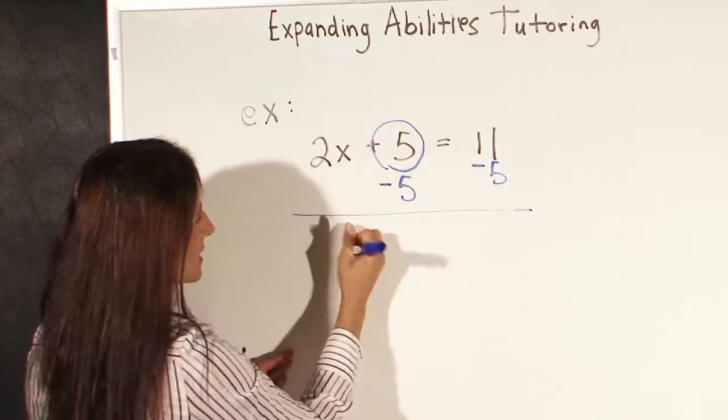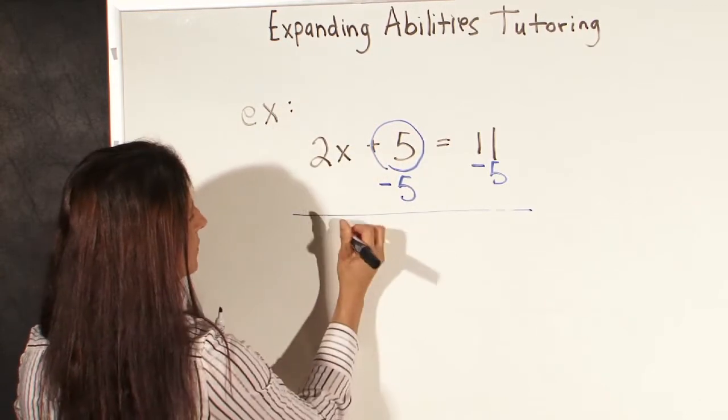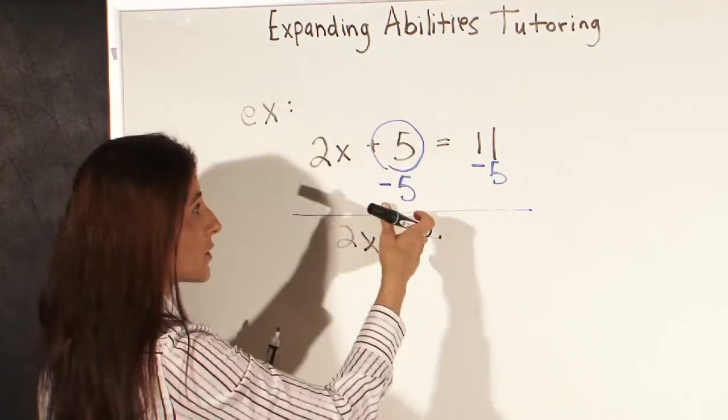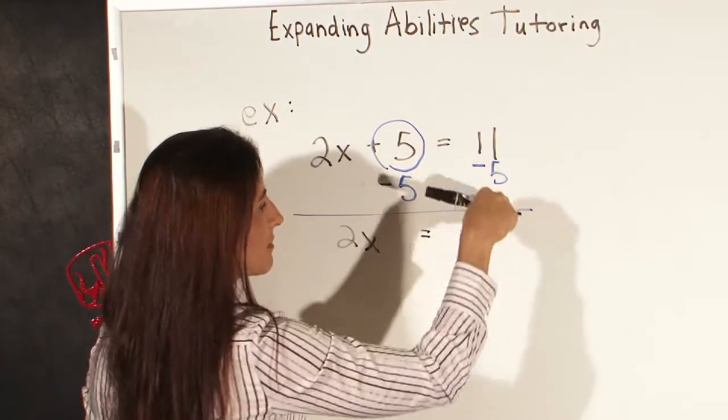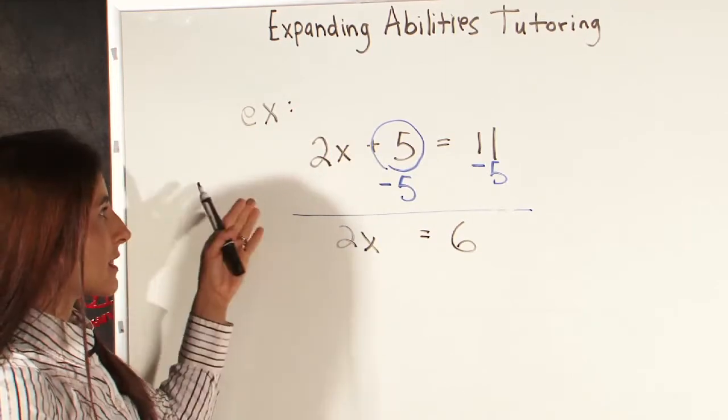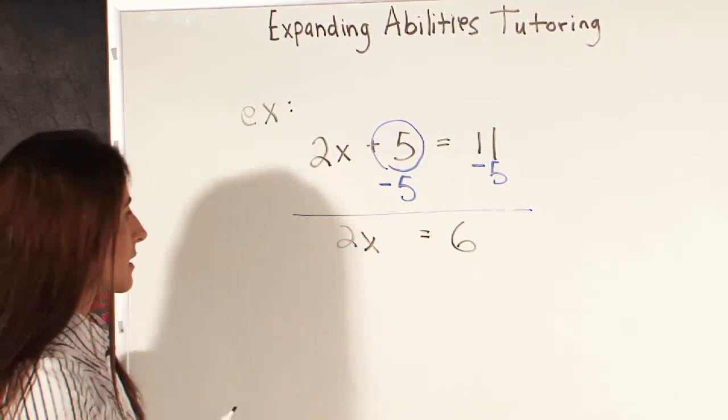So here we bring down our 2x, and 5 minus 5 is 0, so that goes away. And then 11 minus 5 is 6. So that's the first step when solving a simple algebraic equation like this.